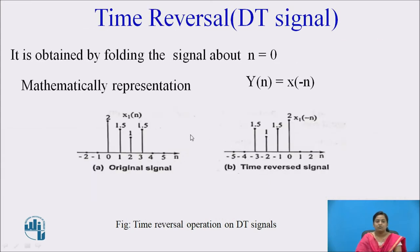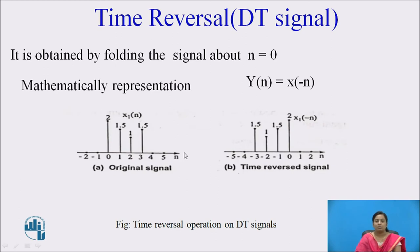Also recall the time reversal property. It is obtained by folding the signal about n = 0. So time reversal of the signal is obtained by folding the signal or by taking the mirror image of the signal about n = 0.